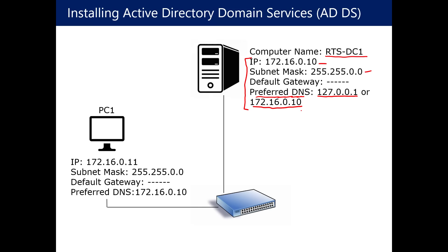When you configure your client computer, on the IP configuration side, give your client an IP address. The preferred DNS on your client is going to always be the IP address of your domain controller, your DNS server. Microsoft recommends as a best practice that your domain controllers also run the DNS service. So whenever my computer resolves anything by name, it queries that machine to look up the name-to-IP address. Whether it's a website, file server, or print server, all queries pass up to that machine. Those are the only prerequisites before installing Active Directory: name the computer and set the IP configuration.